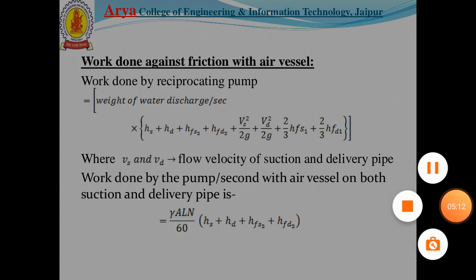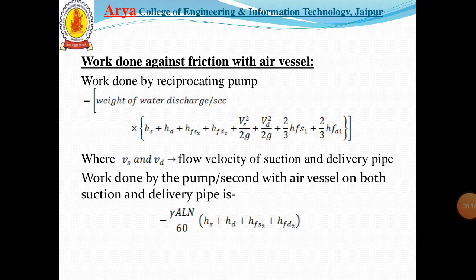The work done against friction with air vessels: the work done by the reciprocating pump equals the weight of water discharged per second into the total head, given by hs + hd + hfs2 + hfd2 + vs²/2g + vd²/2g + (2/3)·hfs1 + (2/3)·hfd1, where vs and vd are the flow velocities in the suction and delivery pipes. The work done per second with air vessels on both pipes is γ·AL/60·(hs + hd + hfs2 + hfd2).